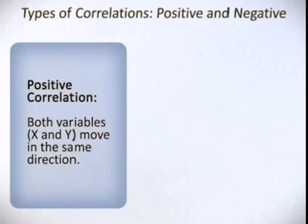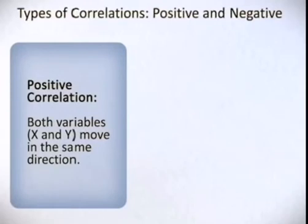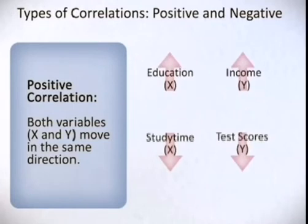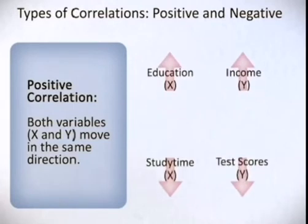There are two types of correlations, positive and negative. In the case of a positive correlation, both variables, X and Y, move in the same direction. For example, the higher the education, or X, the higher the income, or Y.